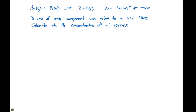Let's first calculate our initial concentration. If we have three moles per 1.5 liters — dividing three by 1.5 — we're going to have a concentration of 2.00 molar for each species. So that means 2.00 molar for H₂, for F₂, and for HF.